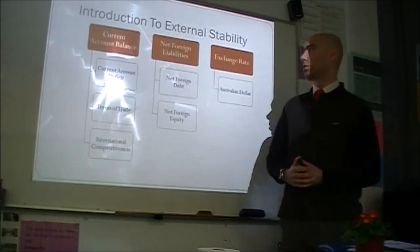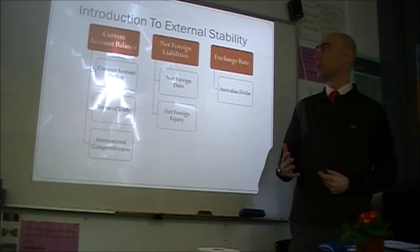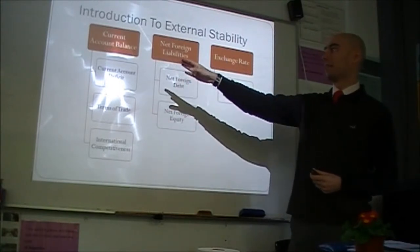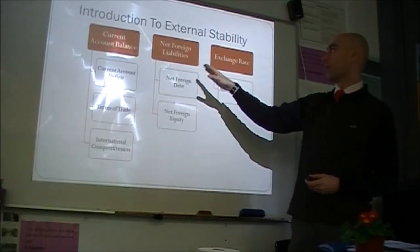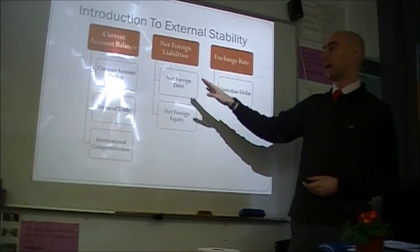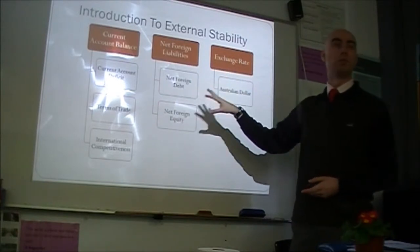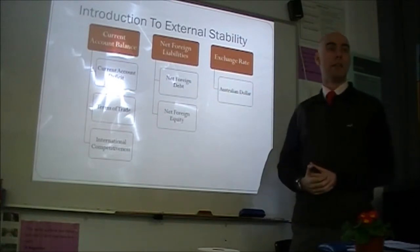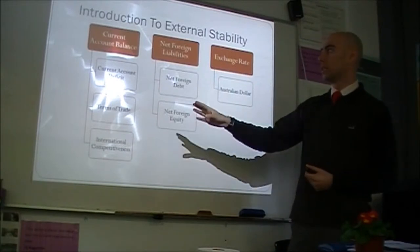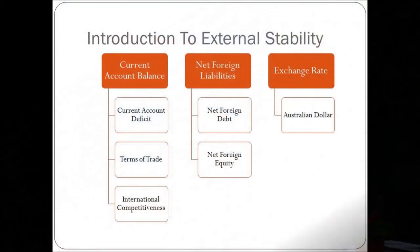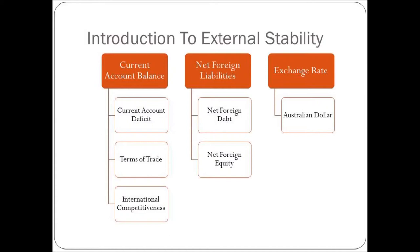A little bit of an introduction to external stability. There are three main areas that we're going to be looking at: the current account balance, the net foreign liabilities, and the exchange rate. Each of those are going to be split up into three, two, and one subsection. We're going to look at the current account balance today. The three things in there are the current account deficit, the terms of trade, and international competitiveness. Net foreign liabilities is debt and equity, and the exchange rate covers the Australian dollar.